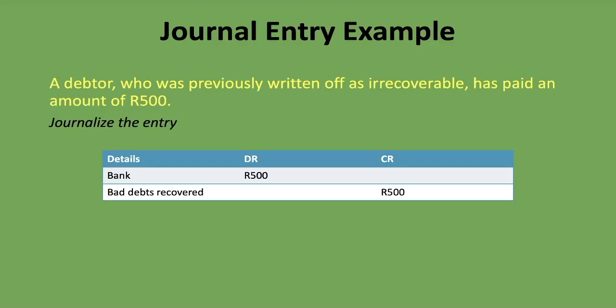That's as easy as it is to journalize bad debt recovered. Why are we debiting bank? Because bank is an asset and it's increasing, and assets increase on the debit side — it's increasing because money is coming into our account from the debtor who was previously written off. Bad debt recovered is an income account, and income increases on the credit side. If you'd like a tip to remember where your incomes, assets, expenses, liabilities and so forth increase and decrease, you'll find a link to a lesson in the description.